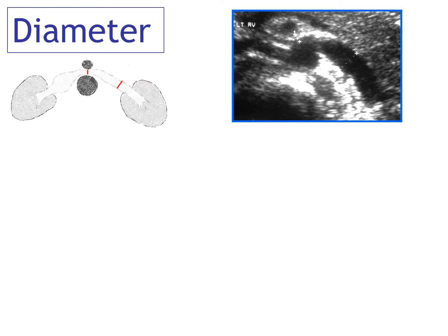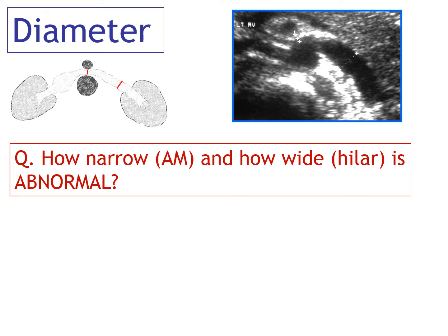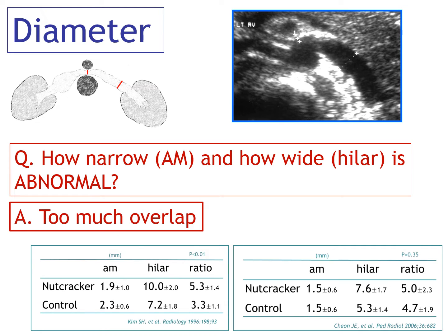In nutcracker syndrome, compared with normal, the left renal vein will be narrower at the aorto-mesenteric portion and wider at the hilar portion. But the question is, how narrow and how wide is abnormal? Because normally the left renal vein in the aorto-mesenteric area is compressed to a certain degree between the aorta and superior mesenteric artery, making it difficult to answer due to too much overlap between nutcracker patients and normal controls.